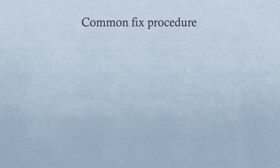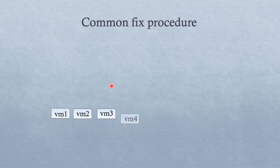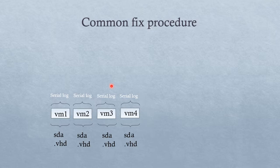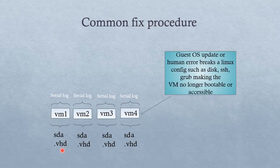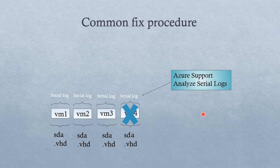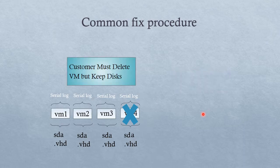So how do we fix problems with virtual machines where the fstab is broken and the VM is not booting? Every virtual machine configured correctly writes to a serial log, located on the physical host. If we perform an operation in our guest OS — such as updating the OS or making syntax changes in fstab — something breaks our fstab. We then reboot the machine and the machine no longer comes back up. We contact Azure support, who can collect the serial logs and analyze them.